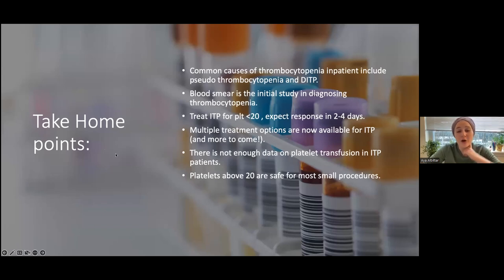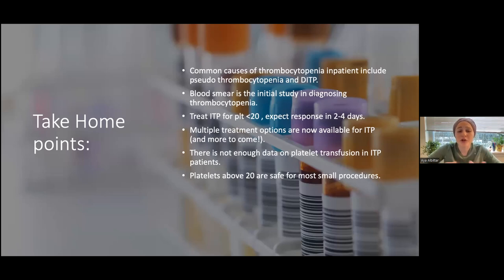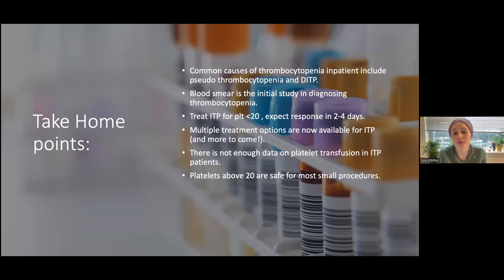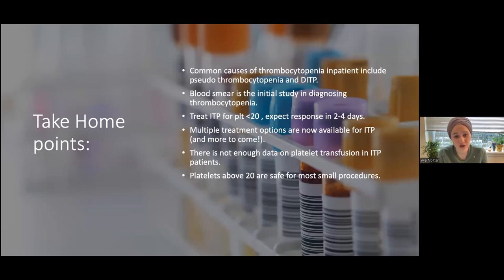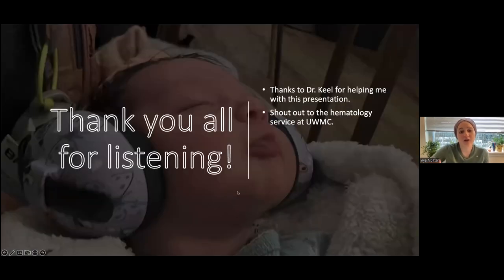Take-home points: the most common causes of thrombocytopenia in inpatients include pseudothrombocytopenia and drug-induced thrombocytopenia — remember these. Check the blood smear as an initial study to diagnose thrombocytopenia. Treat ITP for platelet count less than 20 and expect response in two to four days. There are now multiple treatment options for ITP and more coming. There isn't enough data on platelet transfusion in ITP patients, so use your best judgment and consult hematology. Platelets above 20 are safe for most small procedures. Thank you everyone for listening.